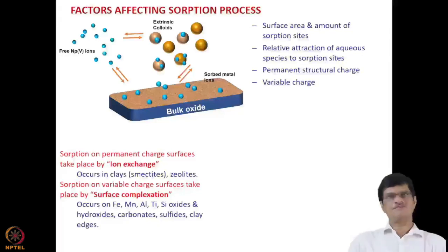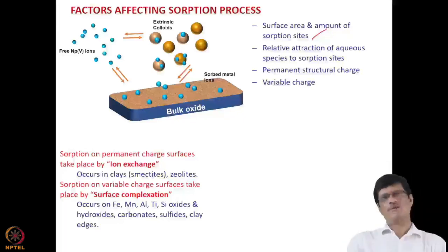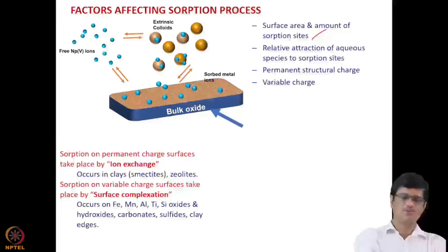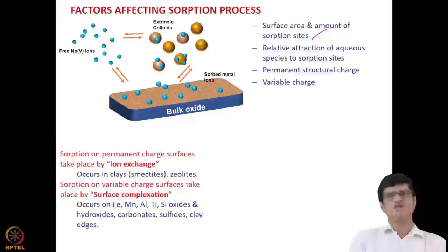Now, the factors affecting the adsorption process: number one is the surface area and the amount of adsorption sites. If we have a very large surface area — that is, the same mineral in finer particles — it will have a very large surface area for a particular weight of the clay mineral. So naturally that will result in higher uptake of the actinide or metal ions, and also the density of surface adsorption sites on the mineral surface.